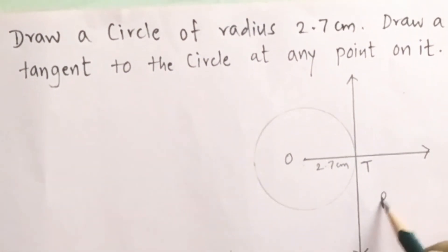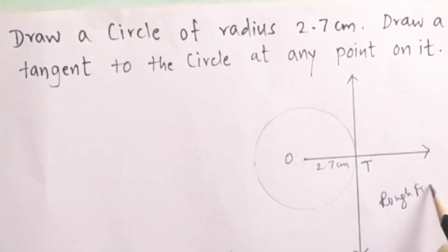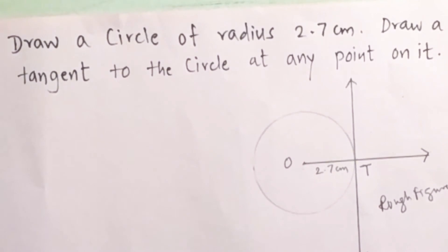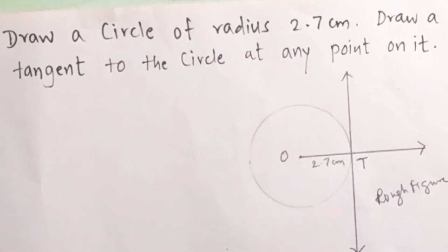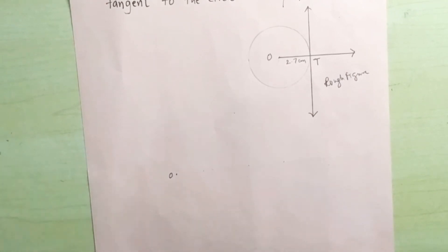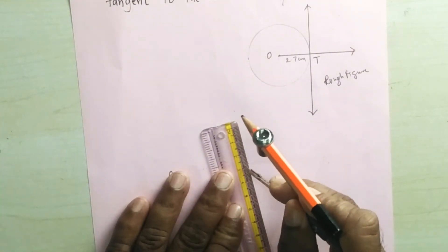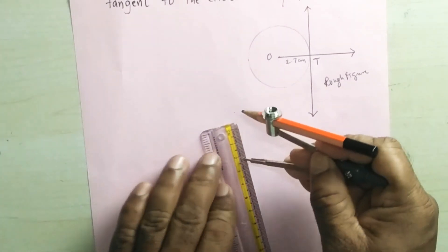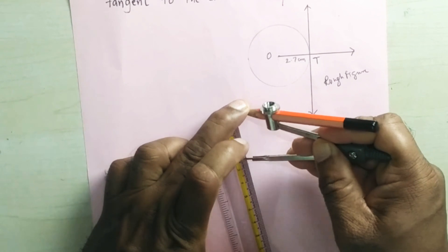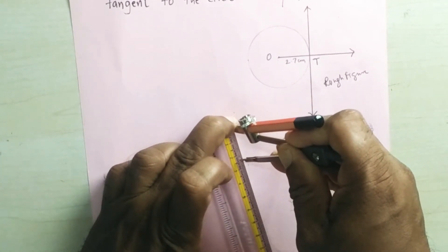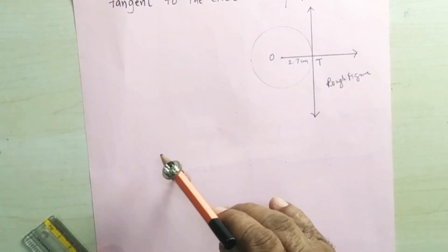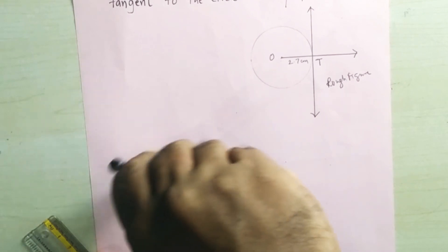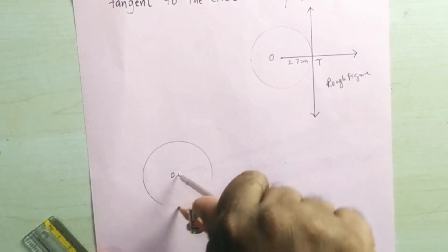This is the rough figure. Now we will draw the actual figure. First, decide a center point O. Take the distance in the compass equal to 2.7 centimeters, place the pointer at the center of the circle, and draw the circle of radius 2.7 centimeters.